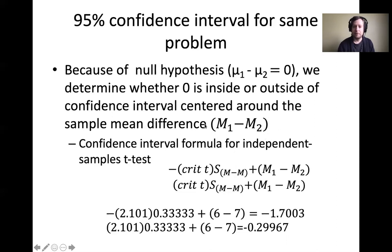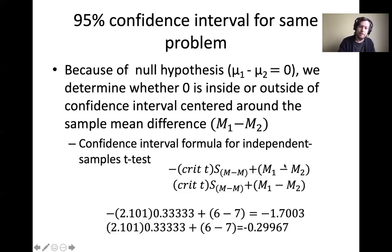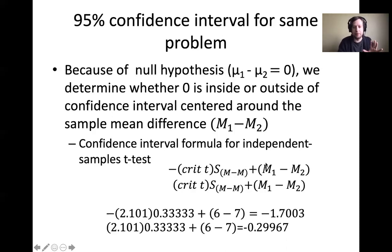The confidence interval is not centered around a single sample mean — it's the difference between M1 and M2. We expect that if the null hypothesis is true, the difference will be zero. We measure the actual difference between M1 and M2 to determine whether it's actually zero or bigger than zero. The formula has the same structure as before: you have a critical value multiplied by the estimated standard error, plus the sample mean difference in parentheses — the difference between two sample means instead of a single sample mean.